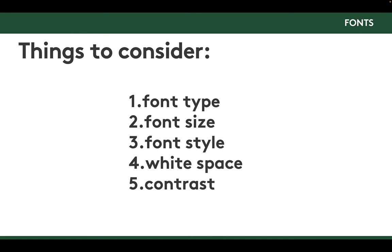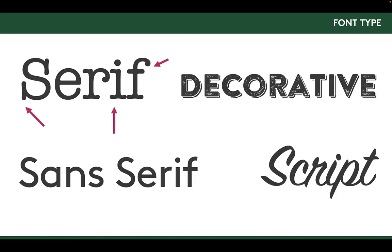So again, five things to consider: font type, font size, font style, white space, and contrast. Talking about font type — these are four examples of the four major families of fonts. Up in the top left corner, we have an example of a serif font. Serifs are the little feet stuck to the bottom of letters, or the little details hanging off the letters. They were originally designed so that people could have more ease of reading printed material — a very old invention that helps your eye follow along a line of printed text.